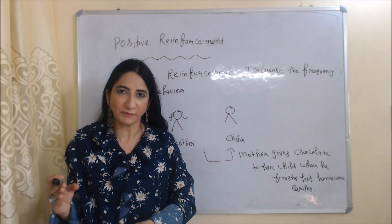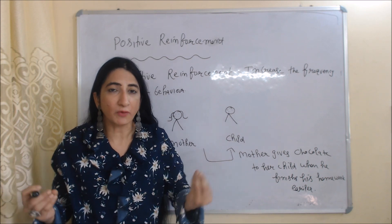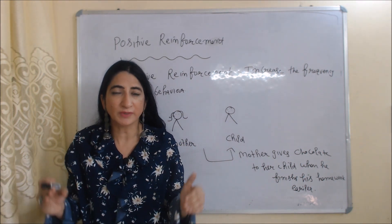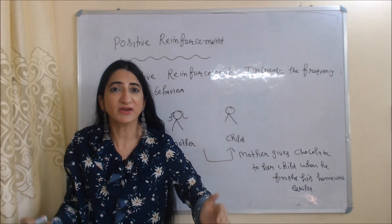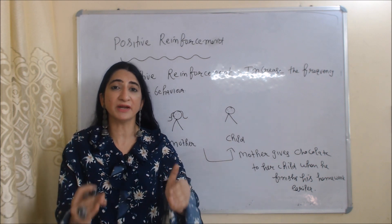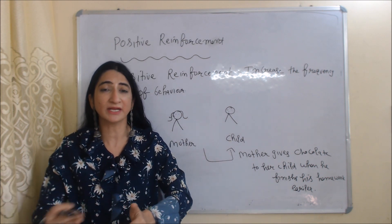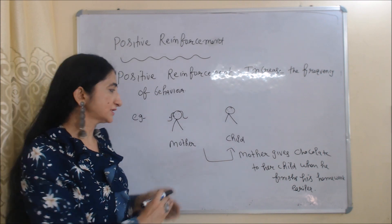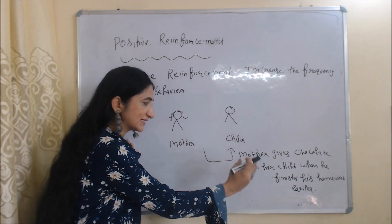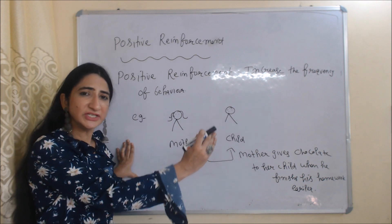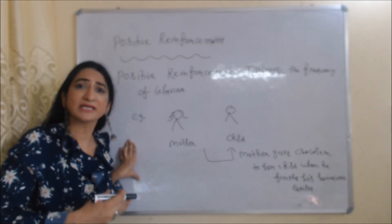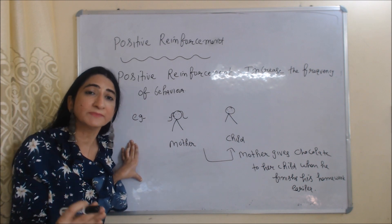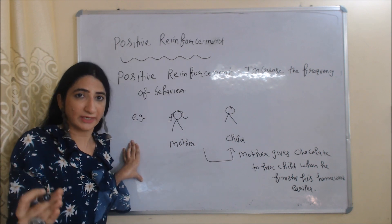Firstly, we are going to talk about positive reinforcement. Positive reinforcement increases the frequency of behavior — meaning when we get positive reinforcement, we will repeat a particular behavior. For example, a mother gives chocolates to her child when he finishes his homework early. That's why the child always finishes his homework early, because he knows his mother will give him chocolate.